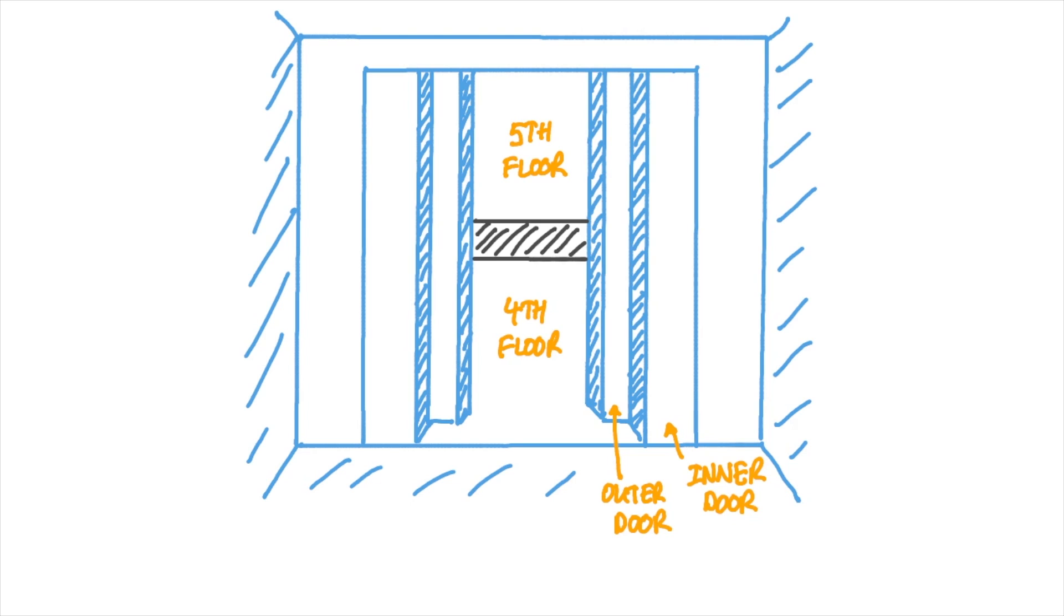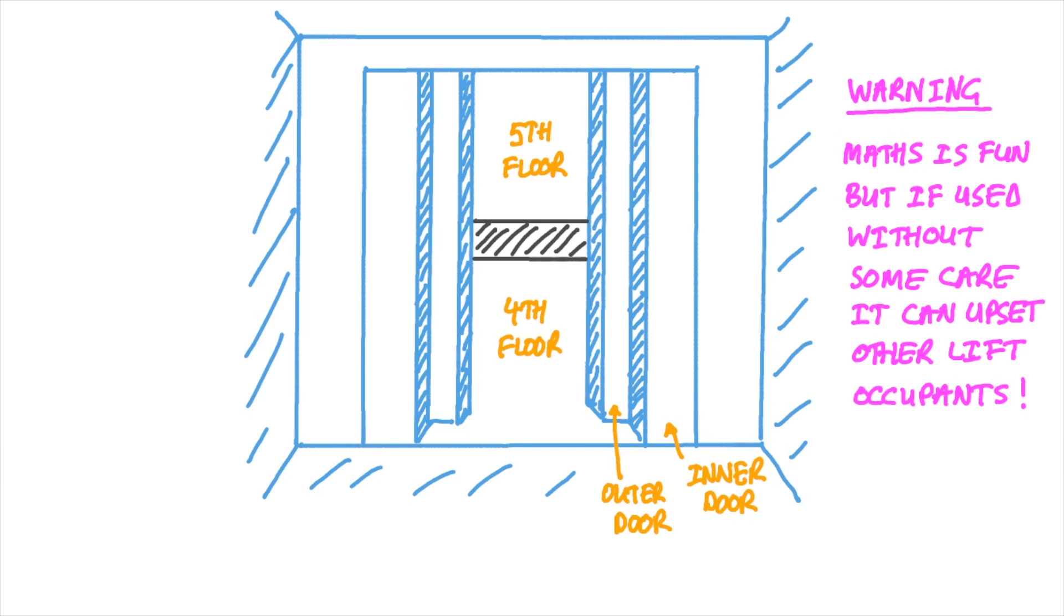So how high up were we actually? Well, eventually the lift engineer came and opened the door, and we discovered that we were about halfway between the fourth and fifth floors. Assuming that the height of each story of the building was about 4.3 meters and there was maybe a one meter pit beneath the lift, that would have placed the base of the lift just over 20 meters above the ground. The errors in our measurements and the calculations we used had luckily balanced out and given us about the right answer.